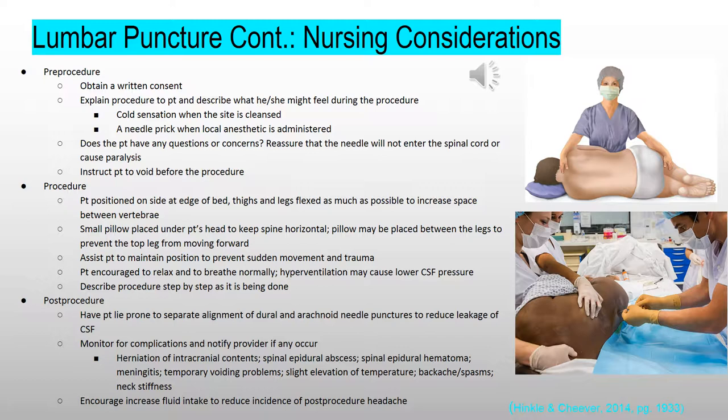Before the procedure, the nurse should obtain written consent, explain the procedure, and what the patient might feel, including a cold sensation when the site is cleaned and a needle stick when the anesthetic is administered. Address any questions or concerns and allow the patient to void before the procedure. During the procedure, the patient needs to be in a cannonball position to increase the space between the vertebrae. Pillows may be placed under the patient's head and between the knees, and the nurse should hold the patient in position to decrease movement. Encourage the patient to relax and breathe normally as hyperventilation will lower CSF pressure. After the procedure, have the patient lie in a prone position to separate the alignment of the needle punctures to reduce CSF leakage.